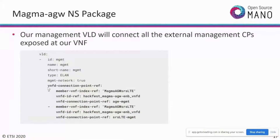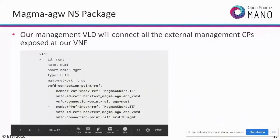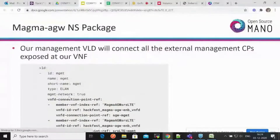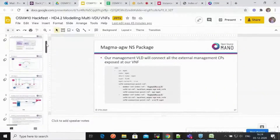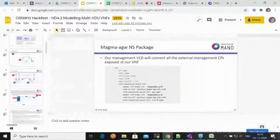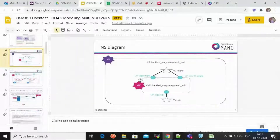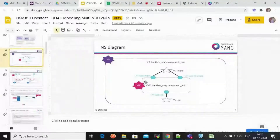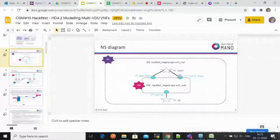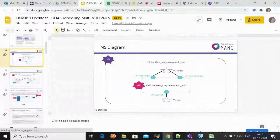Coming to the VLD connecting the Magma access gateway to the router — the SGI network. There's a construct with the VNF connection point reference pointing to the exact VNF and package. The important key is the VIM network name: if you have a pre-created network in your VIM, use this key so the orchestrator knows to use that already-existing network. This handles the VLD section of the network service package.